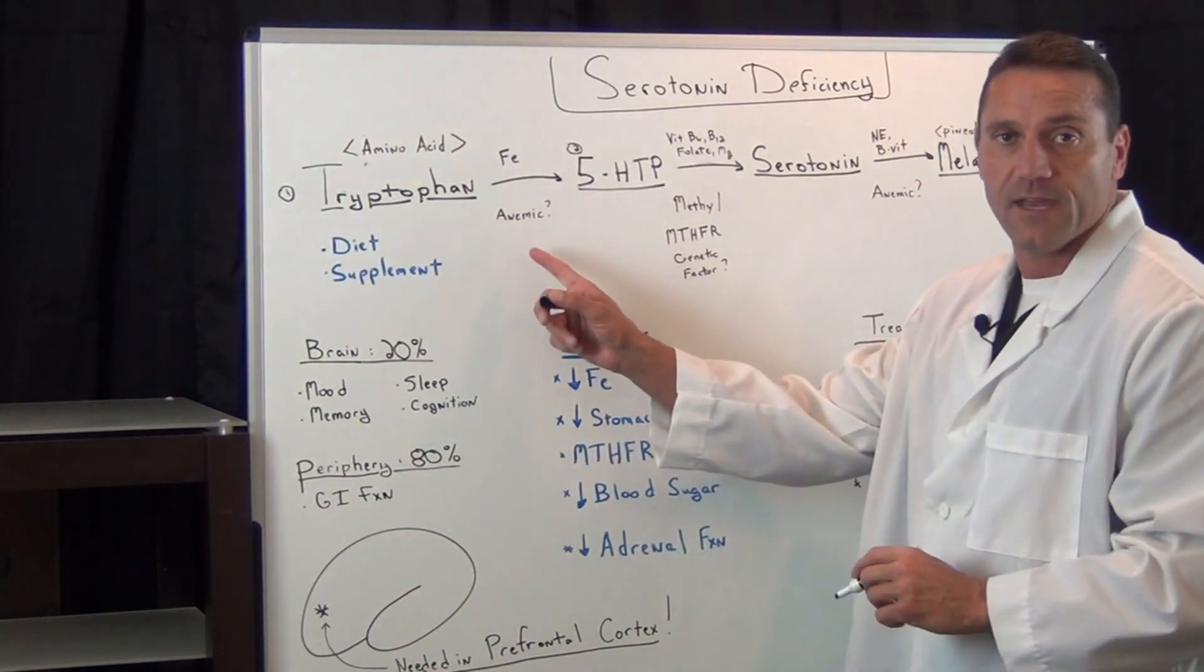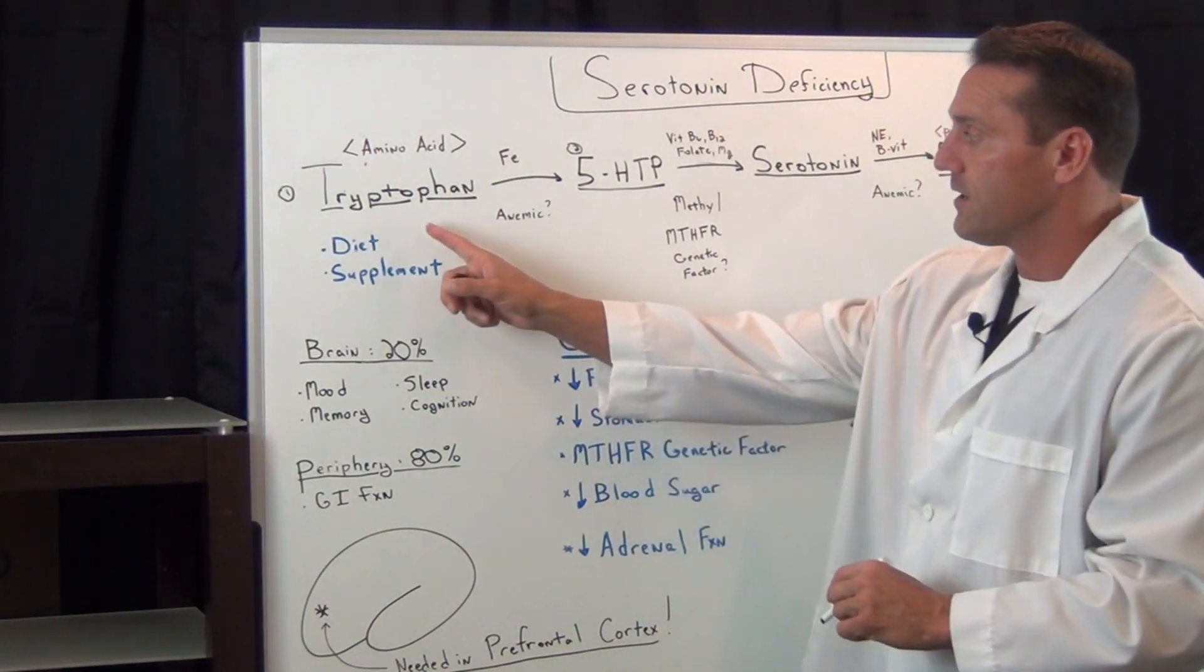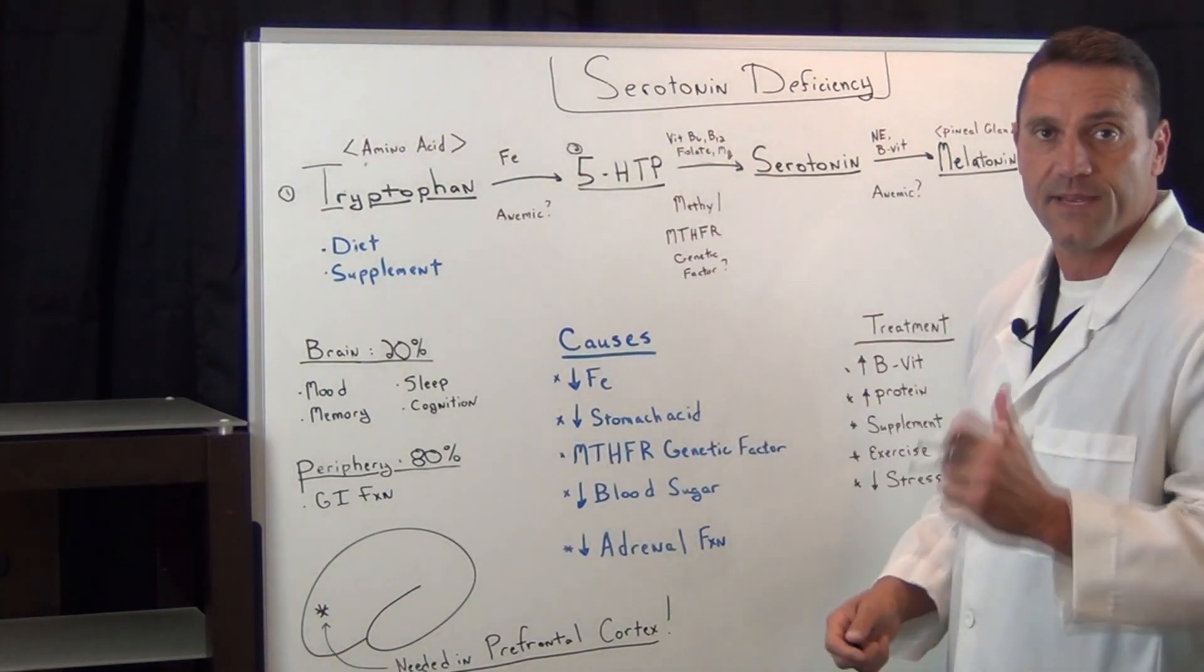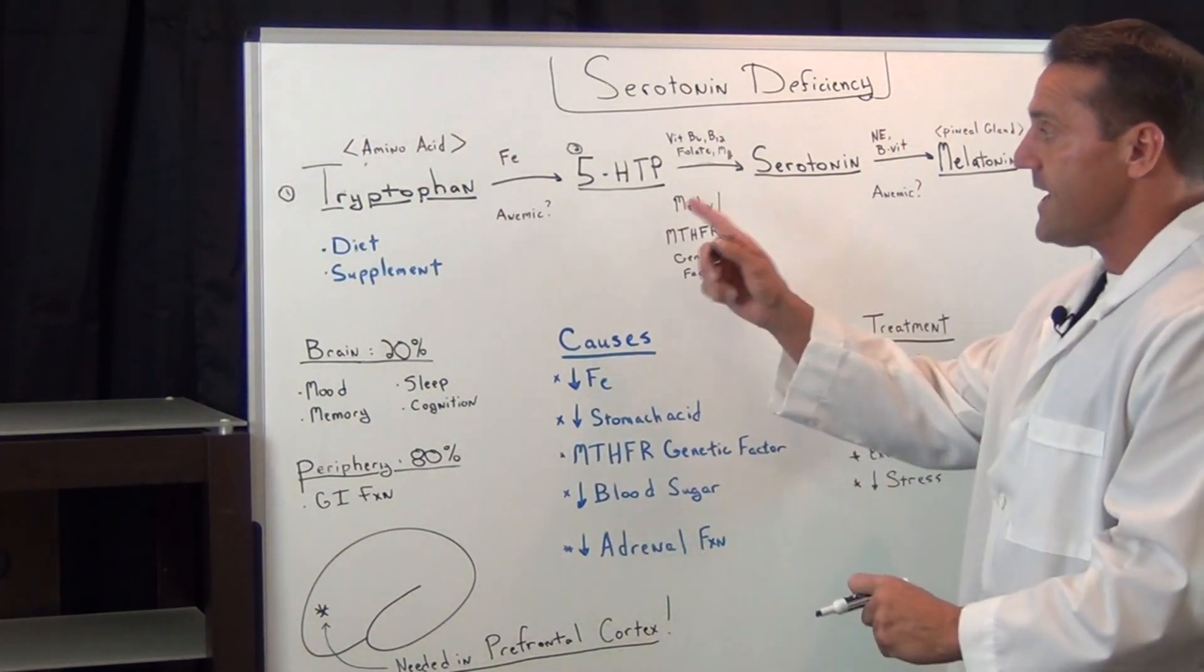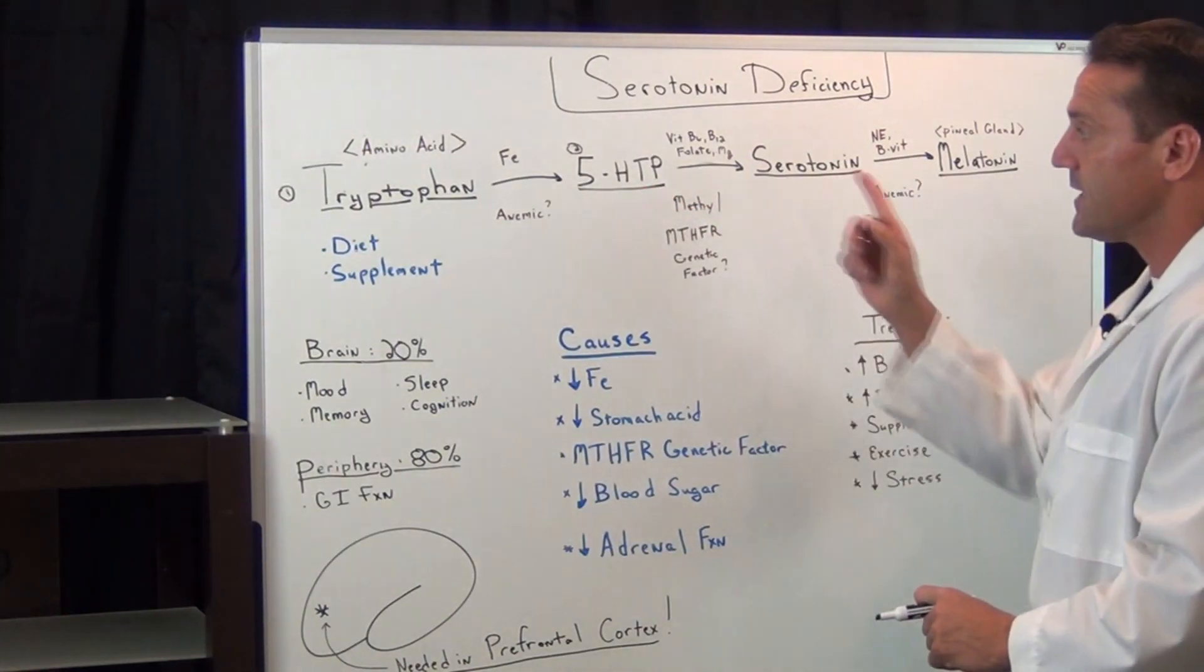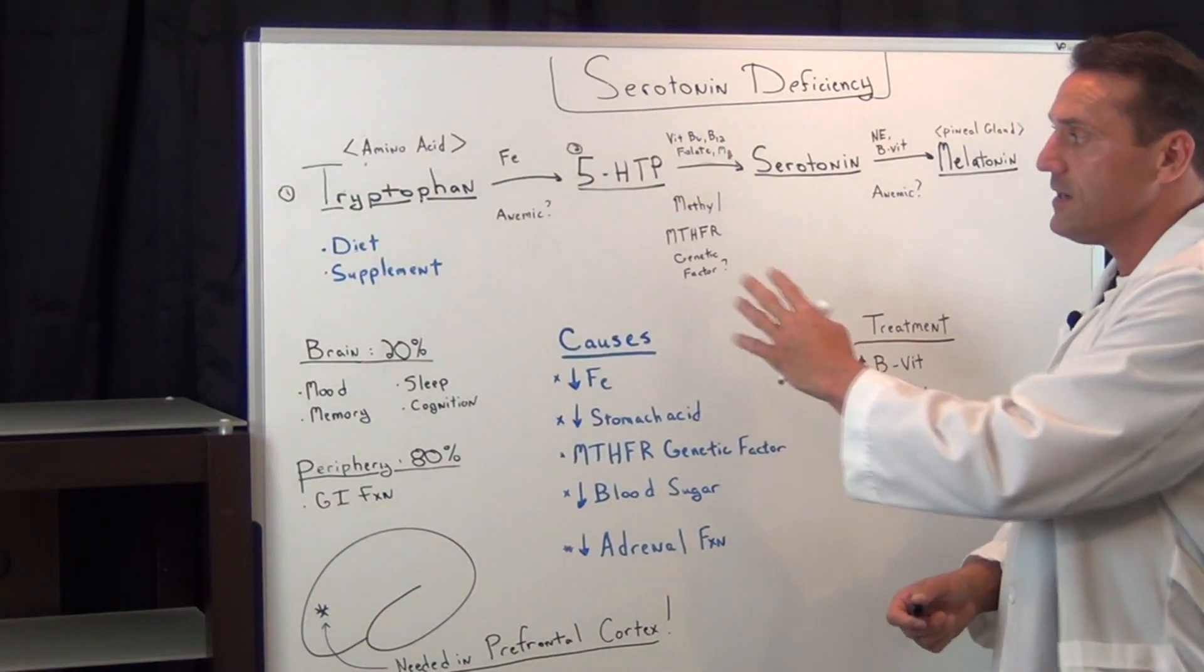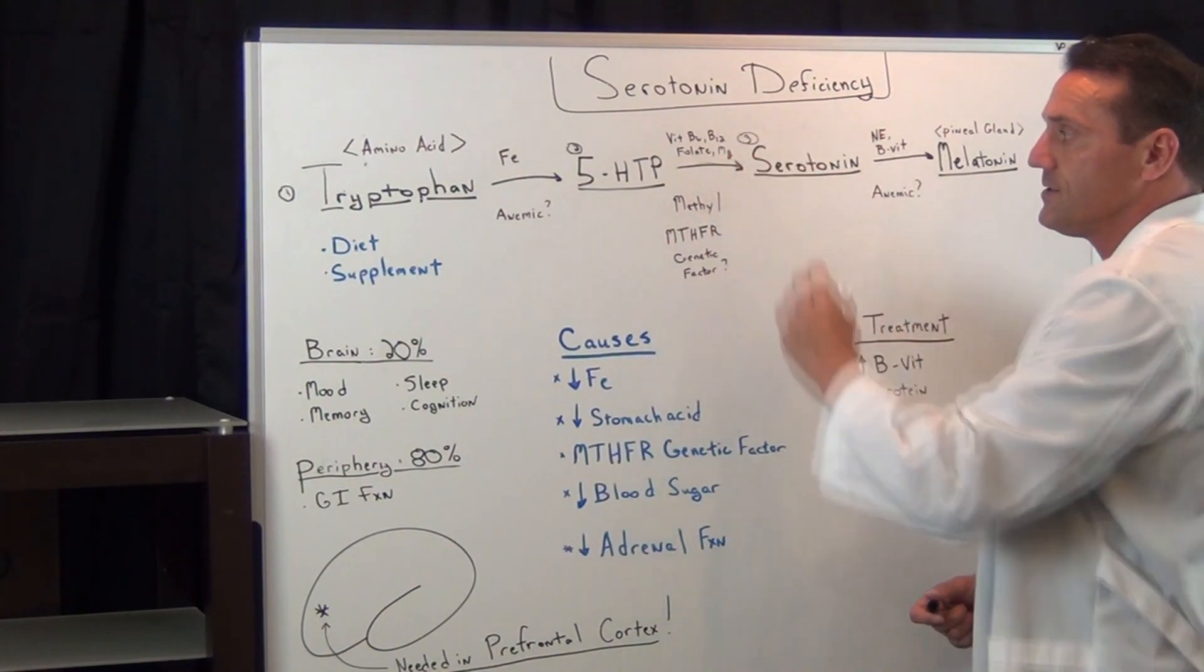Then 5-HTP gets converted with a bunch of B vitamins. This is your B6, your B12, folate, and magnesium. That gets converted from 5-HTP to serotonin. So again, if there's a situation, if you're anemic or if you have insufficient methyl donors, if you have the genetic factor MTHFR, again, this is where you're going to have a situation converting 5-HTP to serotonin.